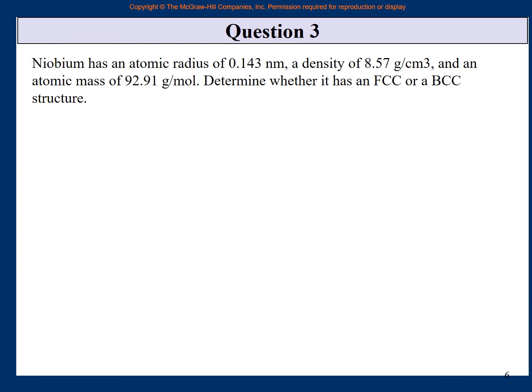We now move to the numerical part of the midterm. Question 3 was that niobium has an atomic radius of 0.143 nanometer, a density of 8.57 gram per cubic centimeter, and an atomic mass of 92.91 gram per mole. Determine whether it has an FCC or a BCC structure. So again, as I keep on reminding you that if you want to do a revision for the final also, not just a solution, then hide the solution that will come later on and just do it again as a practice.